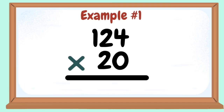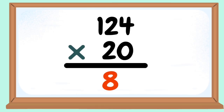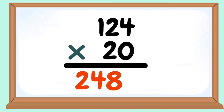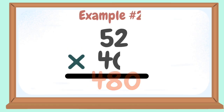Example number 1: 124 times 20. 2 times 4 equals 8. 2 times 2 equals 4. 2 times 1 equals 2. Add the zero. 2,480 is our product.